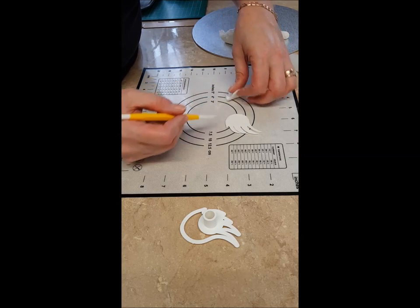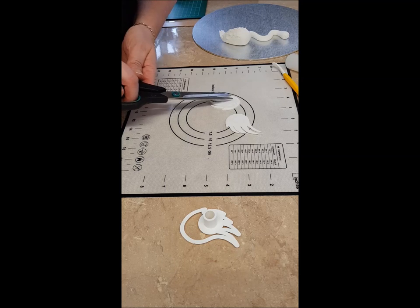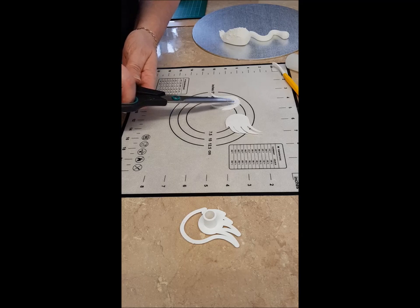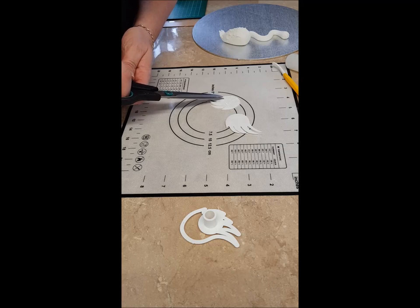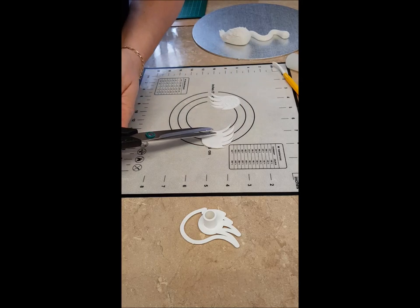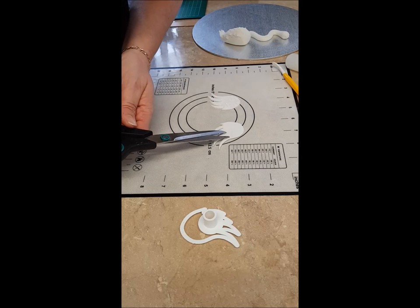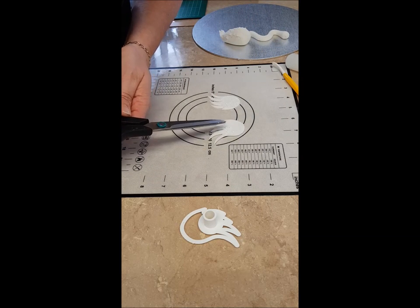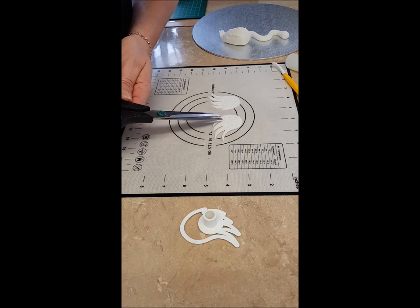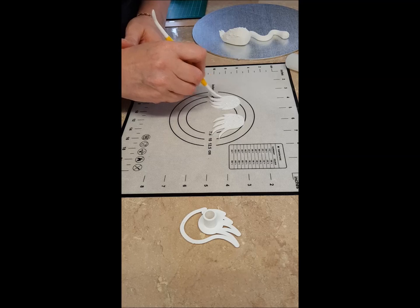If you want to add a bit of character to this, you can use your scissors again and just clip the wings, not too far because you don't want them going all the way through. Same with that one. Then just go down it again with your tool.